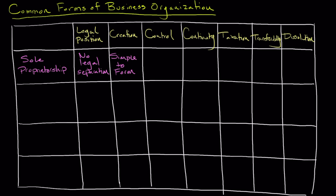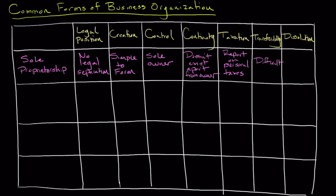It's also a one-person show, which in some cases is actually a good thing, but it ends when you decide to close up shop or if the owner unfortunately passes away. From a tax standpoint, owners in a sole proprietorship report everything on their personal tax returns via a Schedule A form. Selling and transferring the business can be a little tricky, but from a dissolution standpoint, when it's time to cease operations, it's very simple to do.